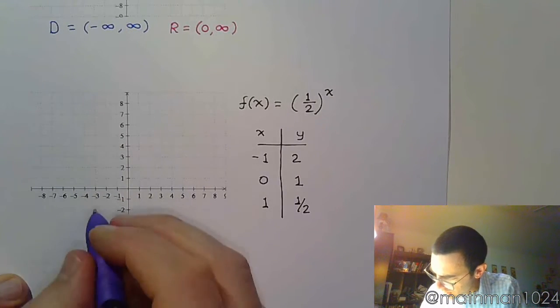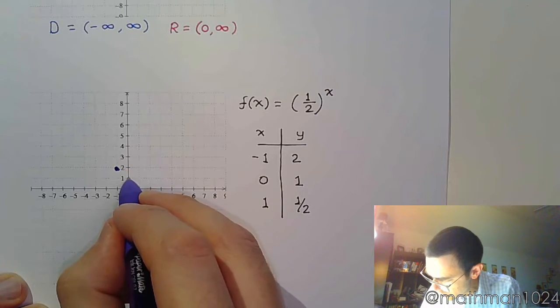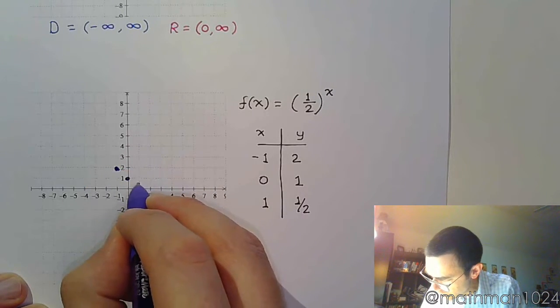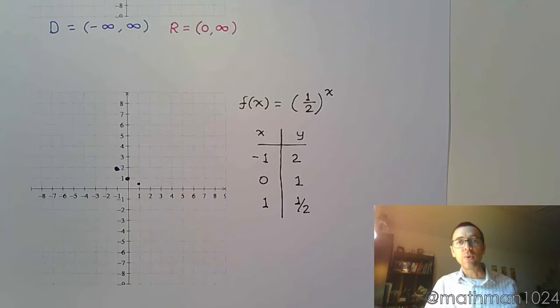So let's plot these points, -1, 2, 0, 1, and 1, 1/2. So I hope you can see there's something a little bit different going on here than we had in the first one.